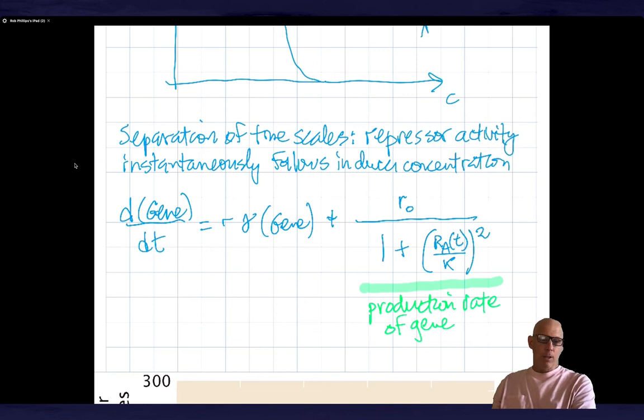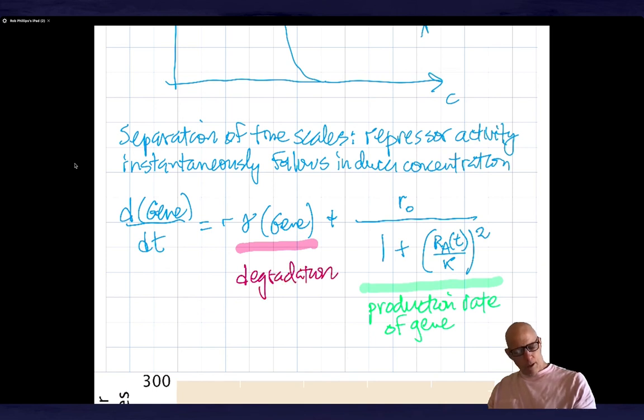We've already encountered this version many times, which is the reason I didn't go through states and weights and all that stuff. Note what happens when r_a is high. When r_a is high, that means the repressor is turning off the production of the downstream gene. r_a in turn depends upon the concentration of the inducer. This term over here, in red, is just the degradation.